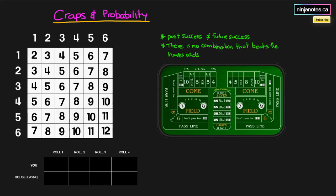We're going to cover some quick rules. First, past success never equals future success. So if there are streaky people at the table and everyone's getting excited winning money, that does not predict future outcome, because each of these rolls are independent with their own probabilities. Just because someone has done well in the last few rolls doesn't mean the streak will continue. Also, there is no combination that beats the house.